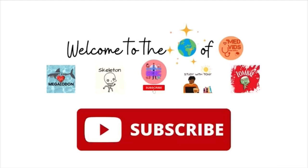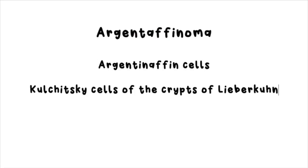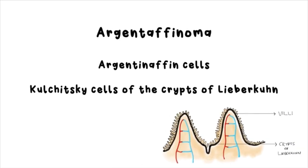Carcinoid tumor of the appendix is also known as argentaffinoma, because they arise from argentaffin cells, which is the other name for Kulchitsky cells of the crypts of Lieberkühn. The crypts of Lieberkühn are the crypts present between the villi lining the mucosa of the appendix.